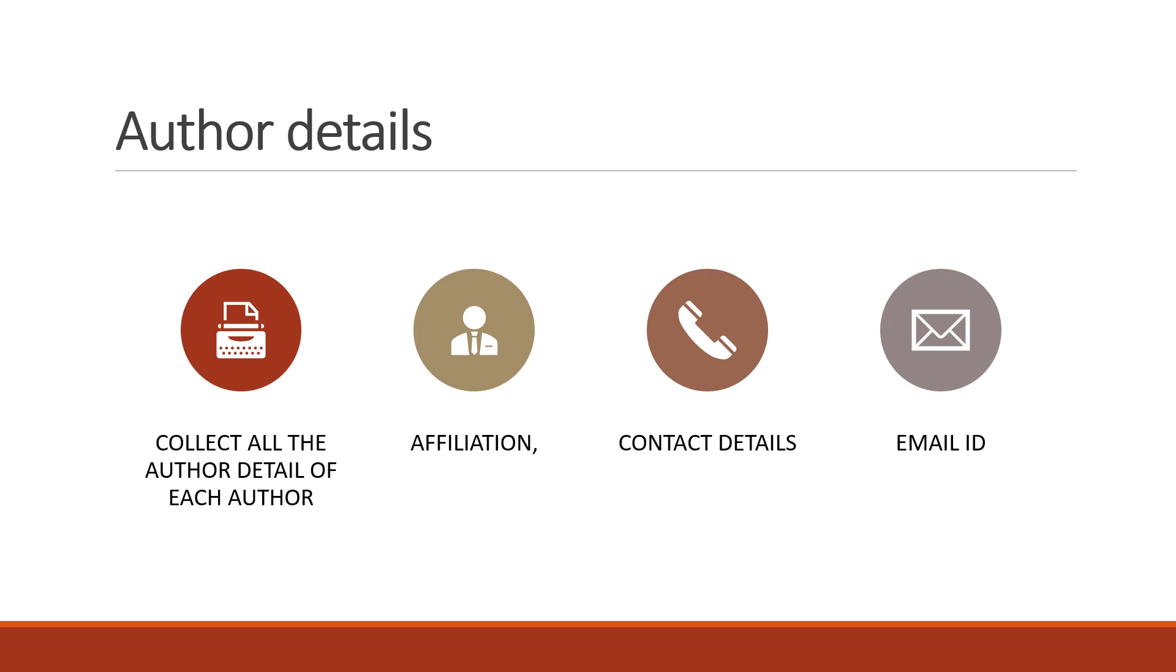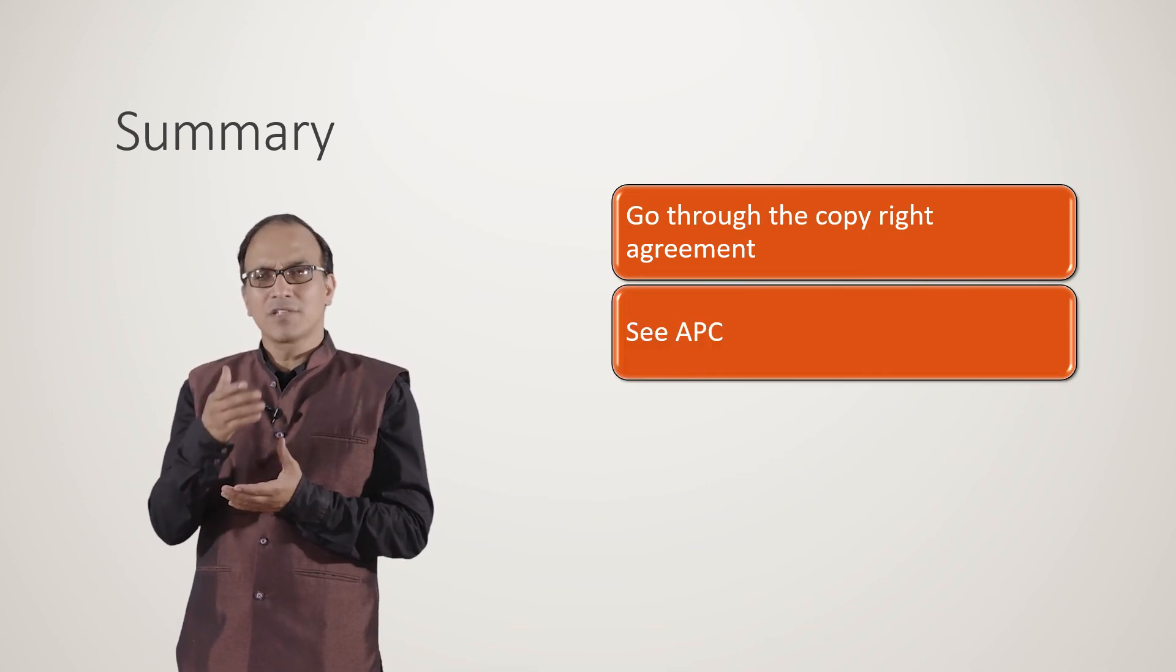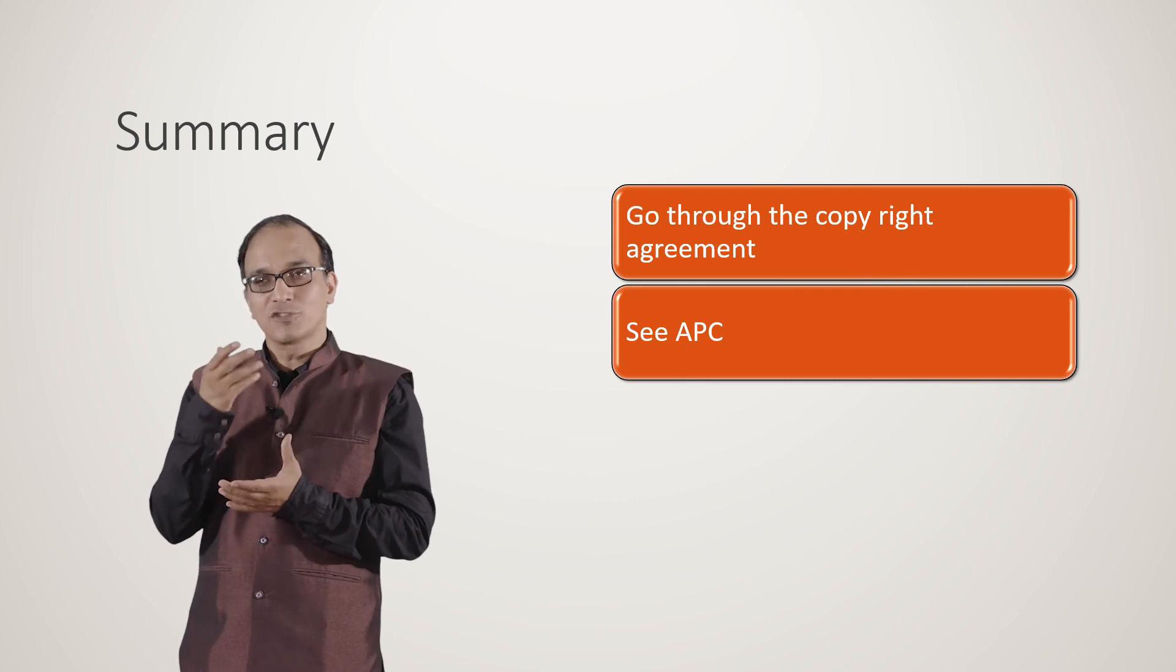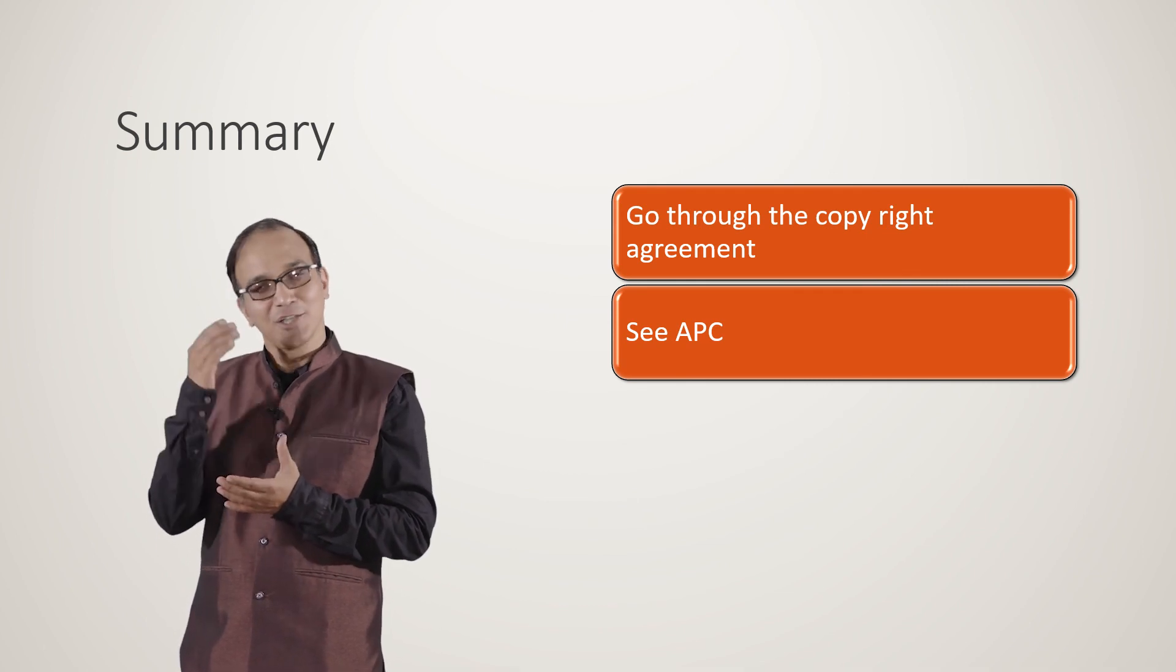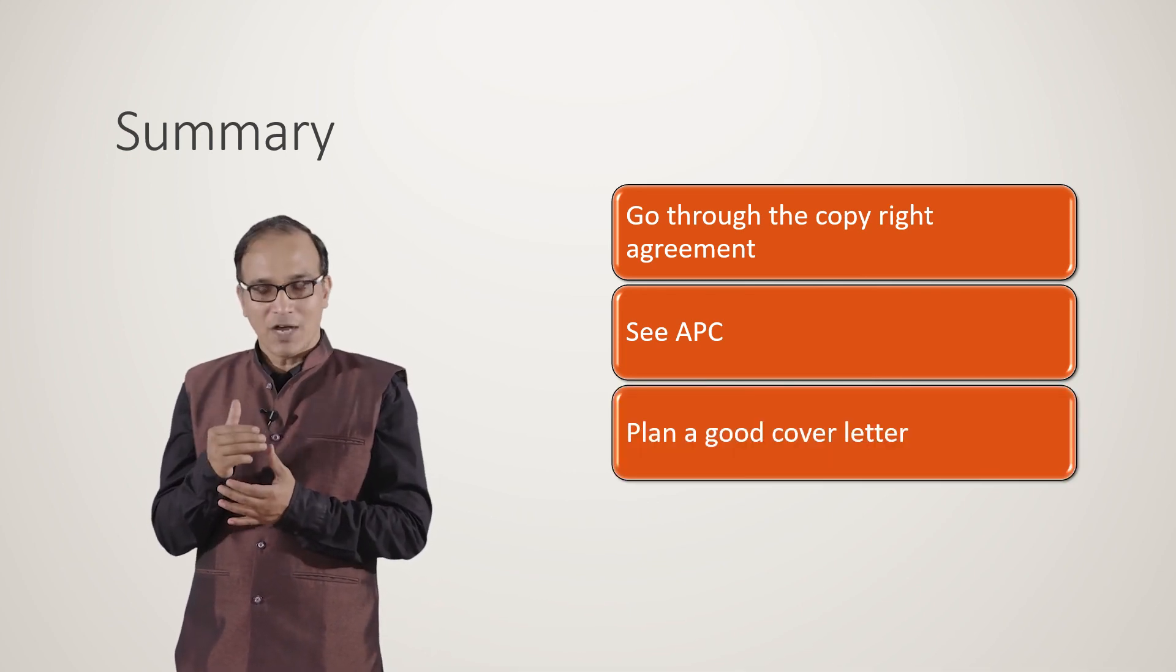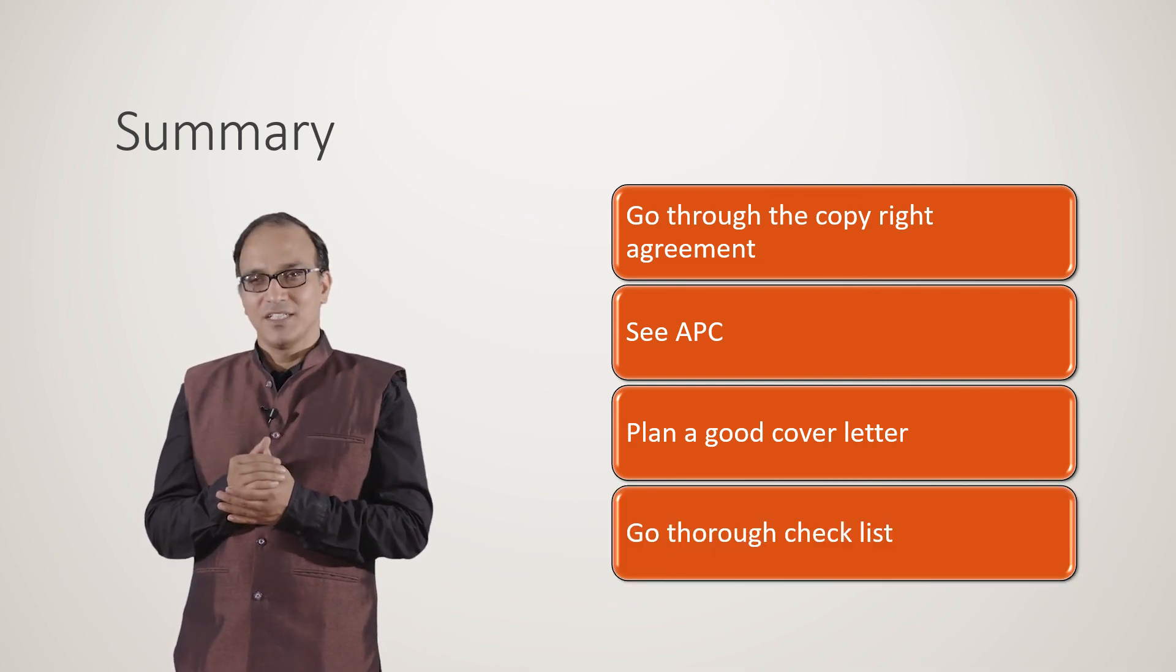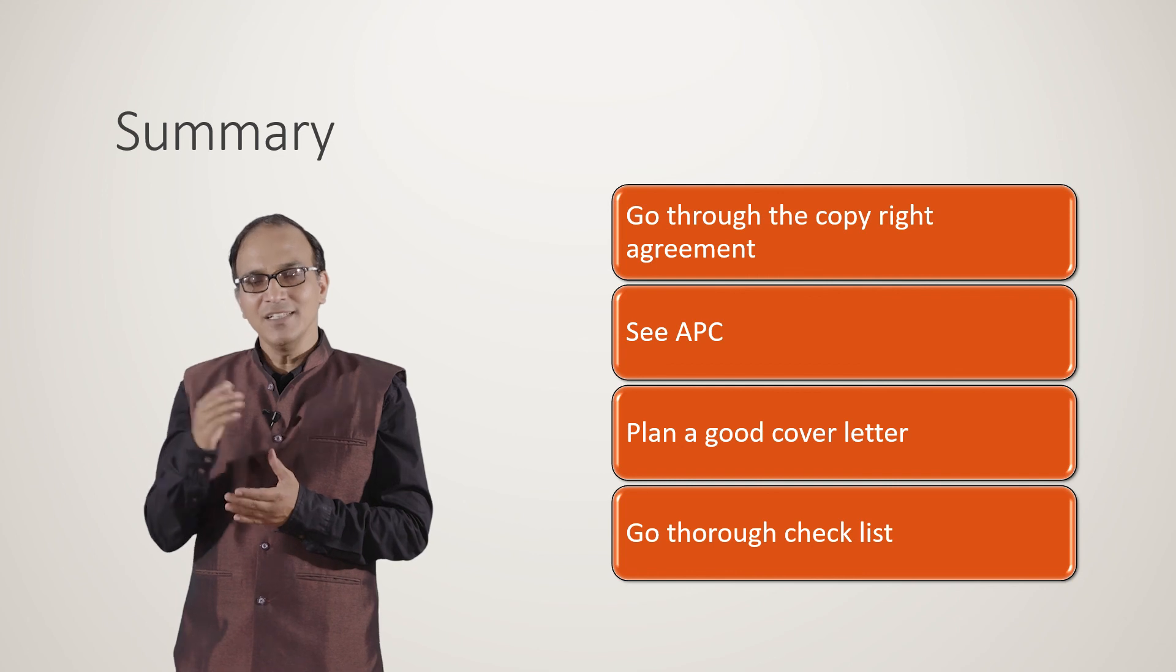So, dear learners, we discussed that for preparing yourself for submission of your manuscript, first go through the copyright agreement, then see the APCs—you should see it even before targeting a journal. Plan a good cover letter and then go through the checklist which we have mentioned. We will be dealing with other aspects in the next section.